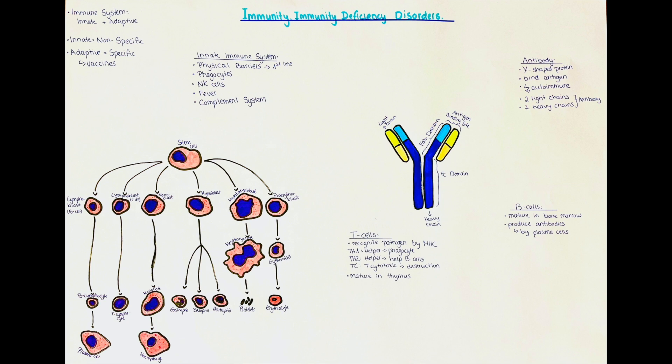In simple terms, these physical barriers block the access of foreign pathogens to our body. Next up, we will talk about phagocytes. These are also known as phagocytic cells and they are cells of our immune system that engulf or eat up pathogens and debris.